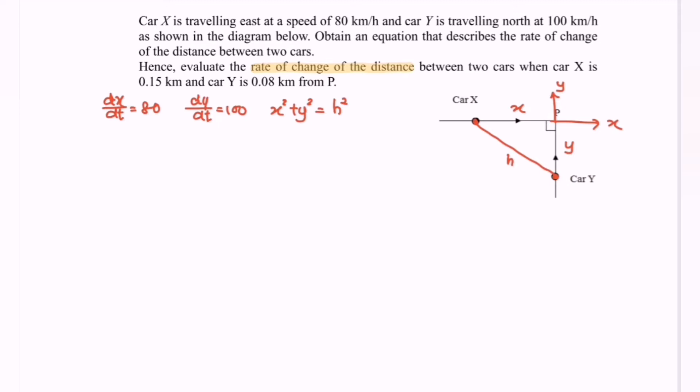When car X is 0.15 km and car Y is 0.08 km from P. So what we have to do is find dh/dt, because they mentioned the rate of change of the distance between the two cars, so we denoted it as H. So given the information where we have X = 0.15 and Y = 0.08.